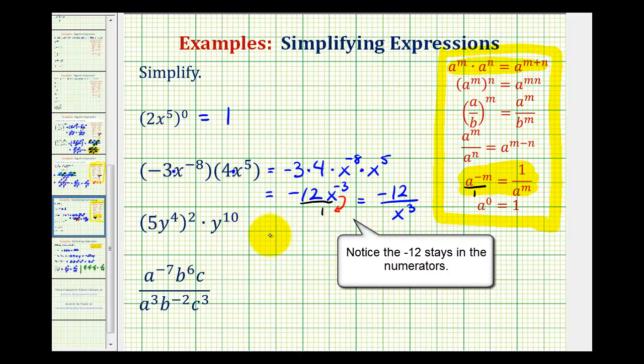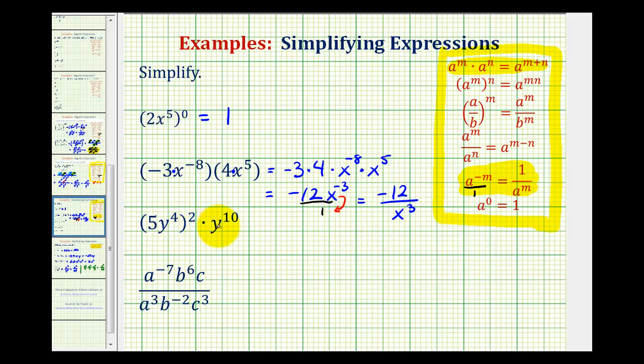Looking at the next example, we can't find this product until we first square five y to the fourth. Again, we can think of this as five to the first, y to the fourth. And we have powers to powers, so we're going to multiply the exponents. So we'll have five to the second power, y to the four times two would be eighth power, times y to the tenth.